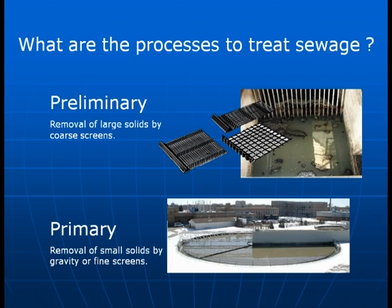The processes used to treat sewage — the initial ones — are called preliminary and primary treatment. Preliminary treatment is really a coarse screen that removes what I call the bicycles and two-by-fours, which is the removal of large solids by coarse screens. Primary treatment is the removal of small solids by gravity or fine screens. The bottom photo is actually a gravity settling pond, but you can also use very fine screens to remove the solids for primary treatment.